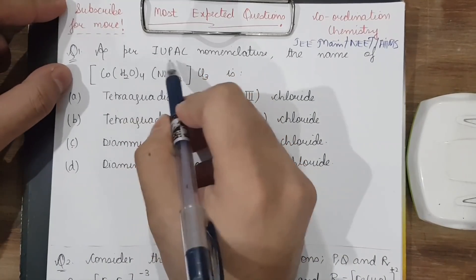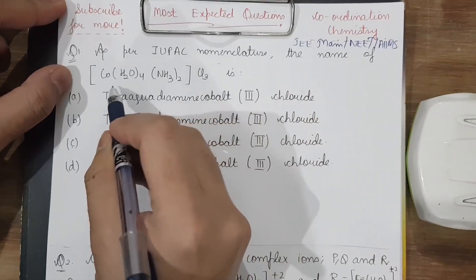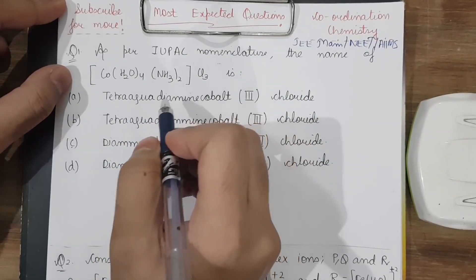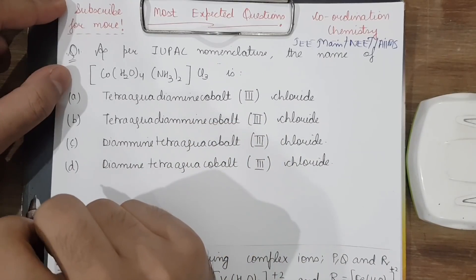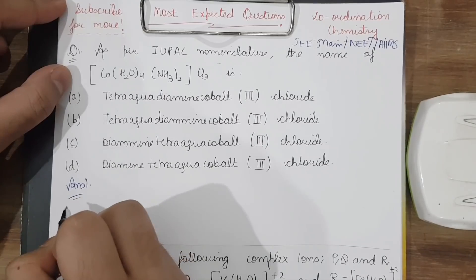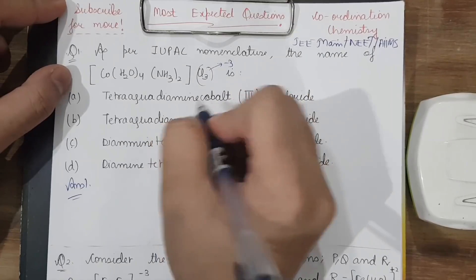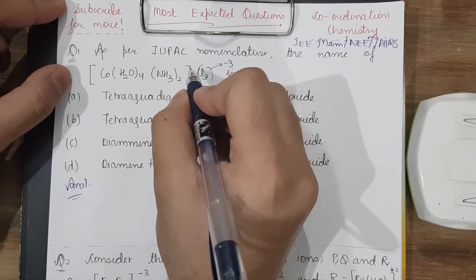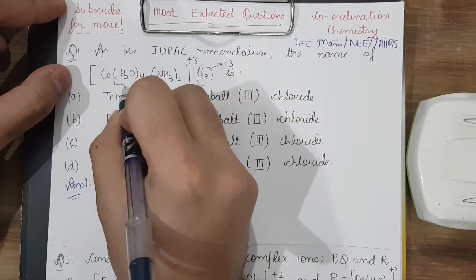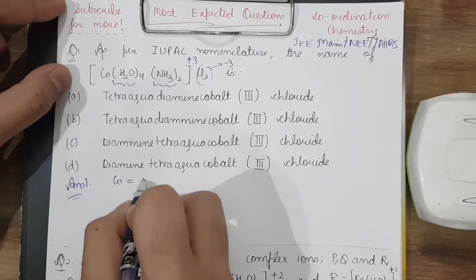The first question: as per IUPAC nomenclature, the name of [Co(H₂O)₄(NH₃)₂]Cl₃ is to be found. In these types of questions, our first mission is to find the oxidation state. This complex totally has a minus 3 charge, so under the coordination sphere we would have a plus 3 charge.